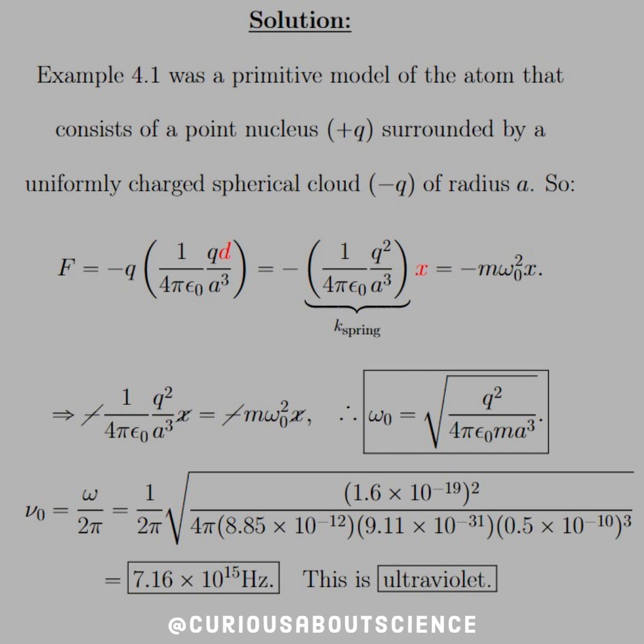If we want to consider this to be a model, force was equal to negative Q times E, the field of the center. And so that's 1 over 4 pi epsilon naught cubed D over A cubed. This comes from the vector notation. And here we see that we just get negative 1 over 4 pi epsilon naught, Q squared over A cubed. And we'll call that the K spring or the K constant times X.